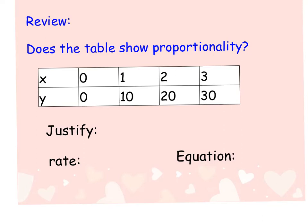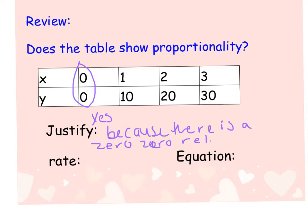Let's check another way. Does this table show proportionality? Well, I can see that 0, 0. So, already I know that, yes, because there is a 0, 0 relationship. However, just because you have 0, 0 does not necessarily mean that it shows it's proportional. We know that all proportional relationships have a 0, 0, but we need to delve in further.